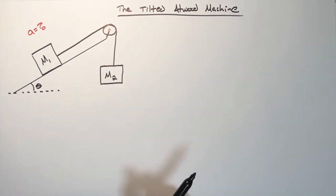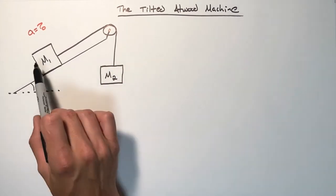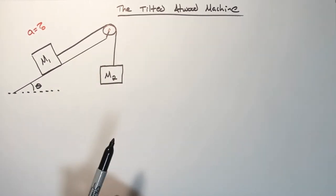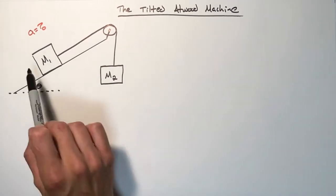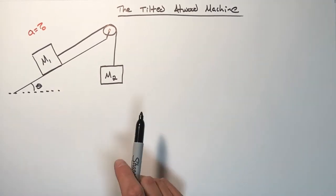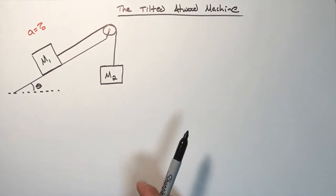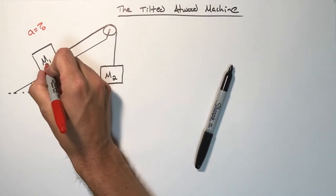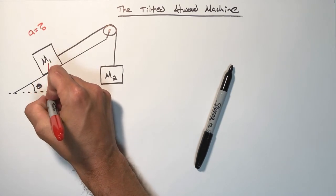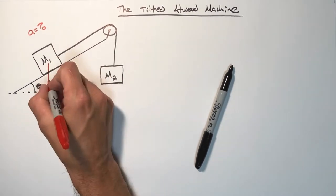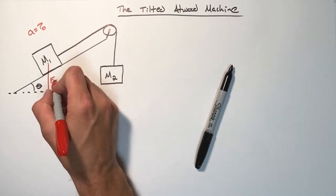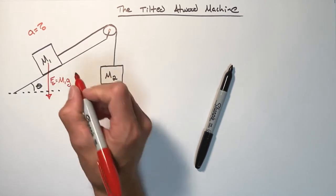Now this is an Atwood machine so what we're going to do is we're going to apply Newton's second law to each block individually. By doing that we'll be able to then combine those formulas or functions that we get from the individual blocks and hopefully come up with a solution for this acceleration of the entire system. So let's look at this block on the hill first. We know gravity is going to act downward on this block. This is the weight of the block. The force by gravity is the mass of the block times acceleration due to gravity.